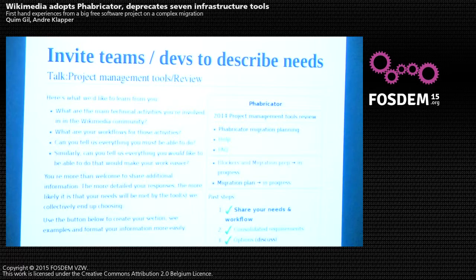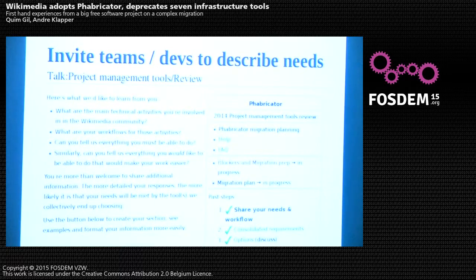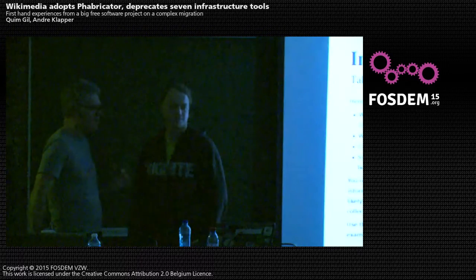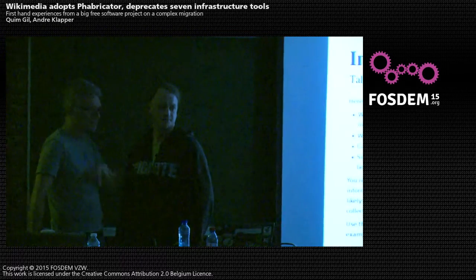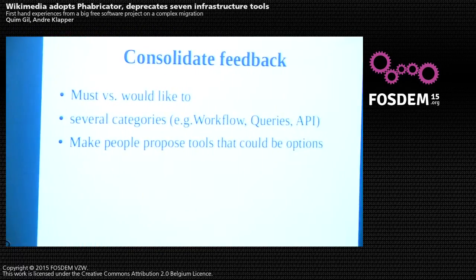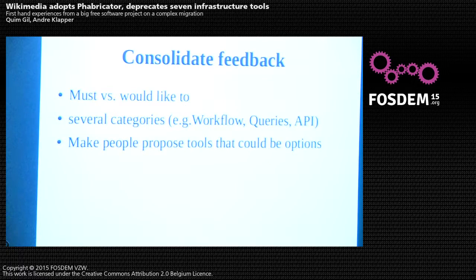We asked a few simple questions and had 24 replies from 24 different types of profiles, covering a range of roles in the community and organization. We collected that feedback and consolidated it into 'must have' versus 'would like to have' in the tool, split into several categories to get a basic idea of what people actually need. All this documentation is on MediaWiki.org.